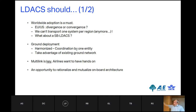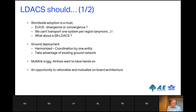Second, ground deployment needs a harmonized solution — coordinated by a single entity and taking advantage of the existing ATN B1 ground network. We would not want to restart a new deployment from scratch when that infrastructure has already been developed. The multi-link aspect is really key: it is important to have flexibility to choose the best link for the best need.